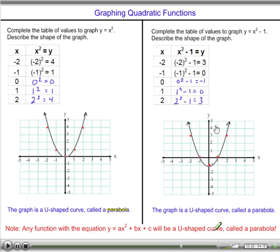As a final note, I want to say that any function with an equation that looks something like this will be a U-shaped curve, which we'll call a parabola. The important thing here is that we have a term that has an x² in it. You may or may not have a term with an x. And you may or may not have another term that's simply a number. For example, here we just had a term with x².